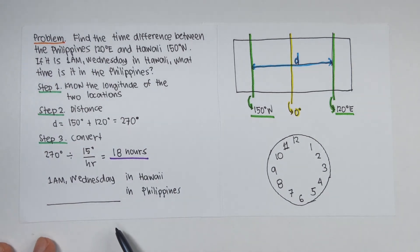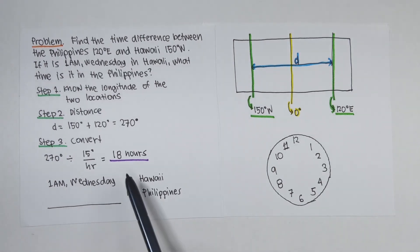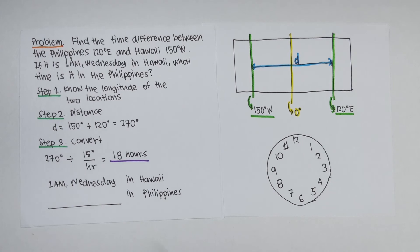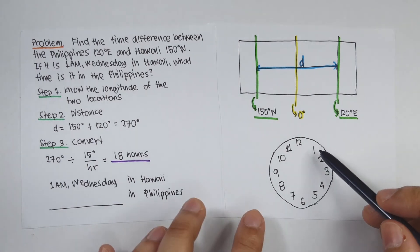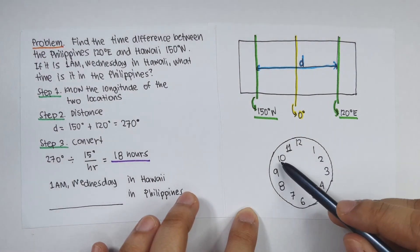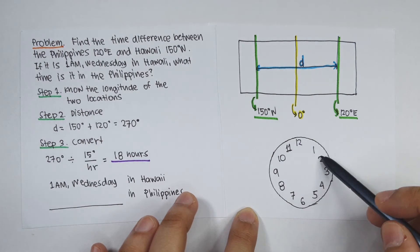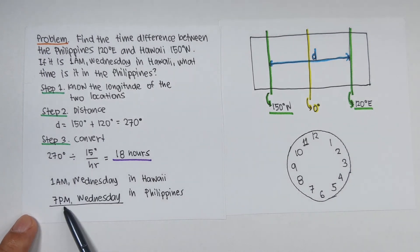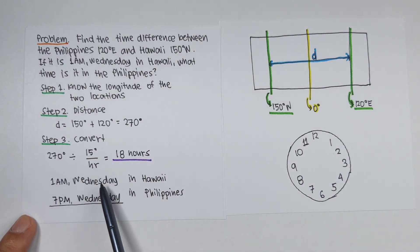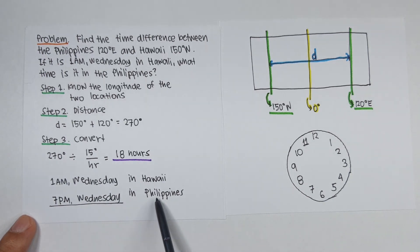That means the Philippines is 18 hours ahead of Hawaii. So if it is 1 a.m. Wednesday in Hawaii, you count 18 hours clockwise since the Philippines is ahead — counting forward 18 hours gives 7 p.m. Wednesday. So if it is 1 a.m. Wednesday in Hawaii, then it is 7 p.m. Wednesday in the Philippines.